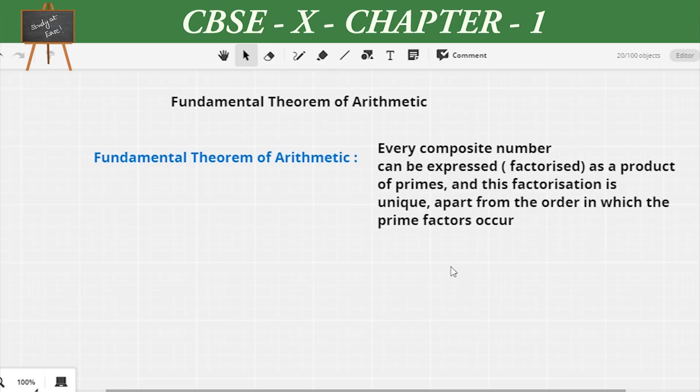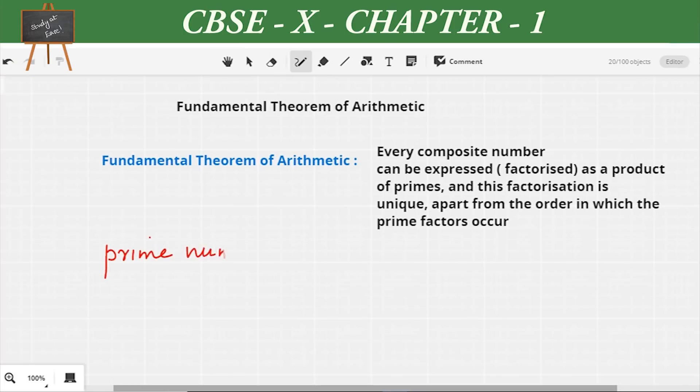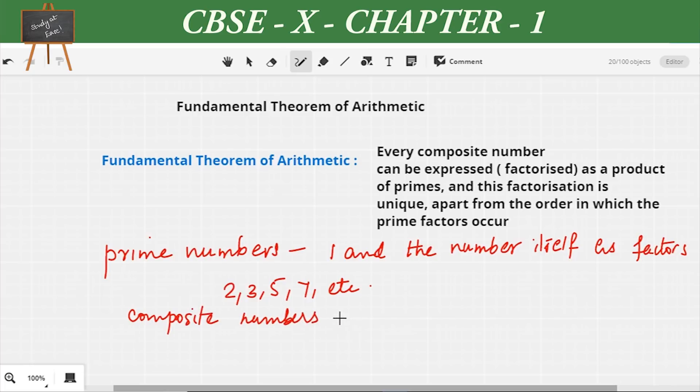Prime numbers are the numbers which have 1 and the number itself as factors, for example 2, 3, 5, 7, etc. Composite numbers are the numbers which have more than two numbers as their factors, for example 4, 6, 9, 10, etc.